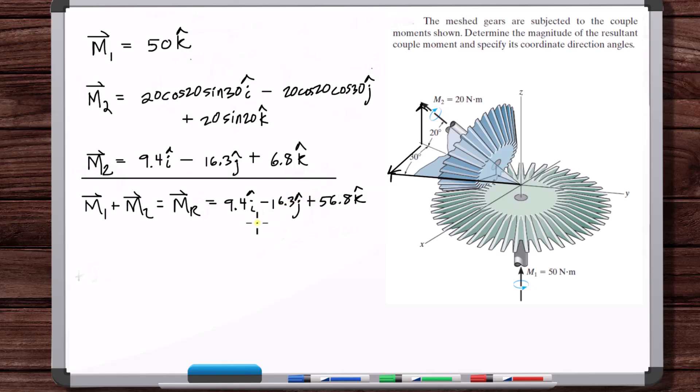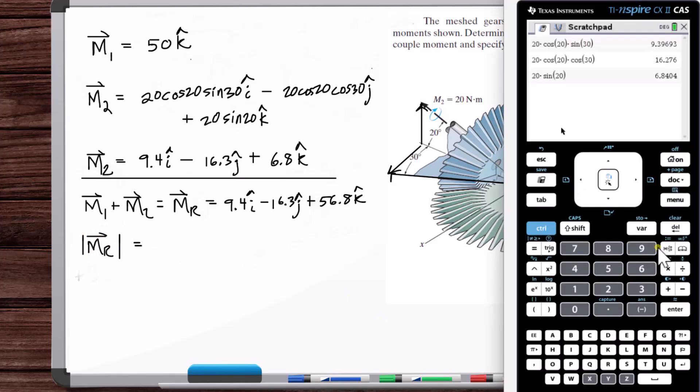Now the coordinate direction angles, this is all from the vectors in space video, where we learn how to do all this. So we need to get the magnitude of this vector first. So what is the magnitude of MR? 59.8 Newton meters.